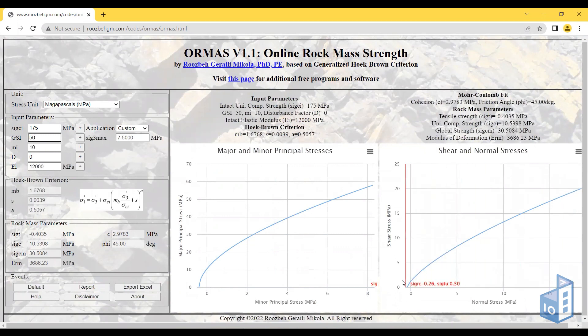If you select different values for sigma 3 max, the minor principal stress maximum value, you can use that to linearize the envelope and calculate the equivalent linearized envelope that fits the non-linear envelope. For sigma 3 max of 7.5 megapascals, I have this cohesion c and this friction angle.